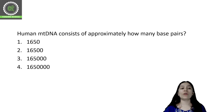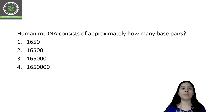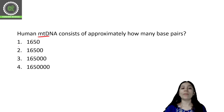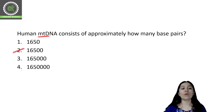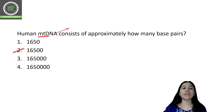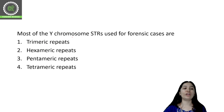Moving to the next question: human mitochondrial DNA consists of approximately how many base pairs? Mitochondrial DNA consists of approximately 16,500 base pairs. Our body has two types of DNA — one is cellular DNA and the other is mitochondrial DNA.